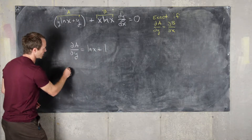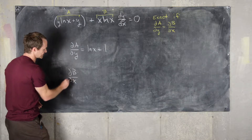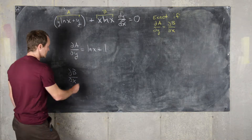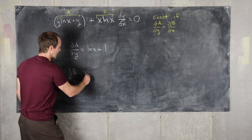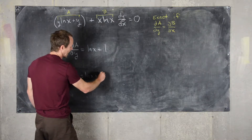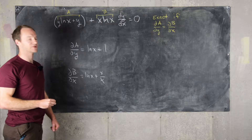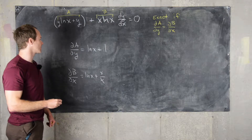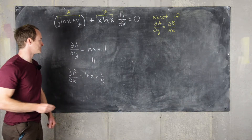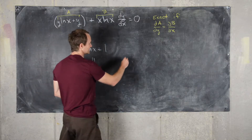Now let's take the partial of B with respect to X. Here we need to use the product rule, so we get the natural log of X plus X over X — because the derivative of the natural log of X is 1 over X. These are obviously the same, so yes, this is exact.